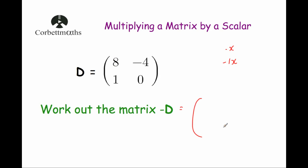So let's do that. We've got 8 — 8 times minus 1 is minus 8. We've got minus 4 — minus 4 times minus 1 is 4. We've got 1 — 1 times minus 1 is minus 1. And 0 — 0 times anything is 0. So if matrix D is [8, -4; 1, 0], then minus D would be [-8, 4; -1, 0].